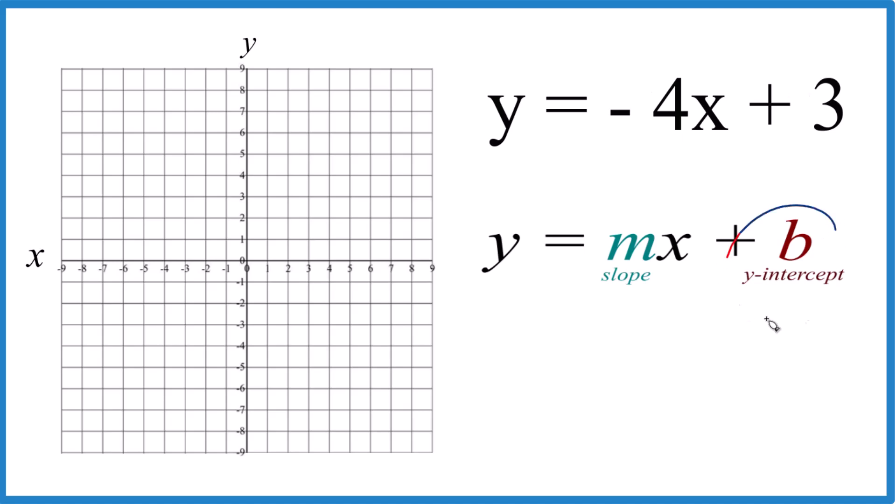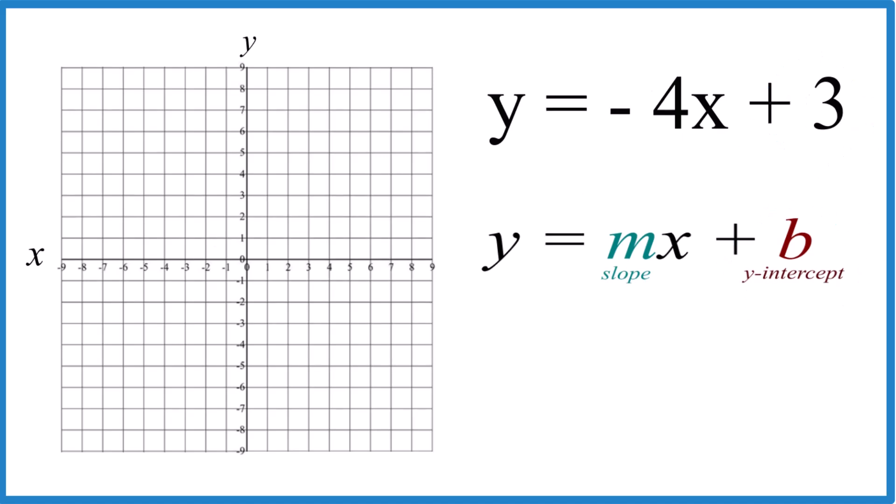Starting out, we have our y-intercept. That's 3. So what we do is we just go to the y-axis and 1, 2, 3. That's where our graph, the graph for y equals negative 4x plus 3, will cross the y-axis.